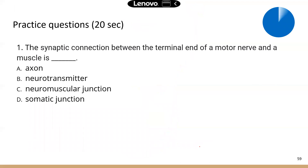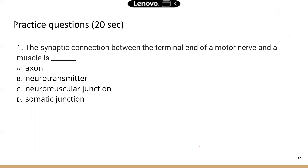Now, practice question. The synaptic connection between the terminal of a motor nerve and a muscle is the neuromuscular junction — this is where a motor neuron can exert control over a muscle fiber. A motor nerve really just means the axon of a motor neuron, because nerves are just bundles of axons.